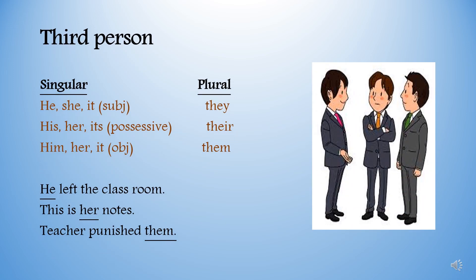Personal pronoun with third person: third person singular subject pronouns are he, she, it, depending upon the gender. Third person plural pronoun is they. Third person singular possessive pronouns are his, her, and its; plural possessive pronoun is their. Third person singular object pronouns are him, her, and its; plural form is them. Examples: He left the classroom. This is her notes. Teacher punished them.